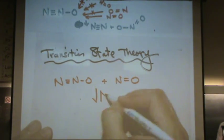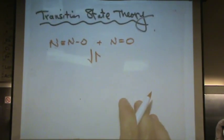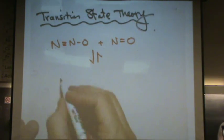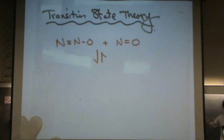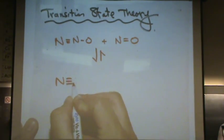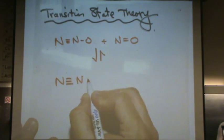I'm going to use double barred arrows to show it could be reversible. In this case, let's say it hits dead on, the orientation's perfect, the kinetic energy is perfect. What's going to start to happen when they interact, when they hit?